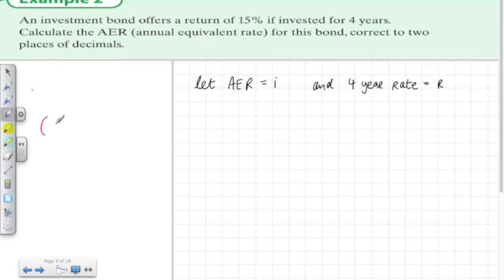Now how do these compare? Well, 1 plus i to the power of 4 will be the same as 1 plus r to the power of 1.